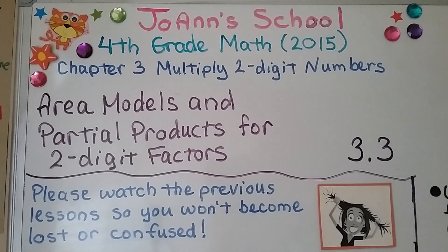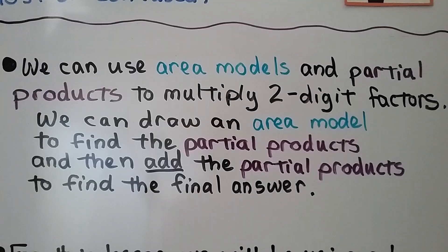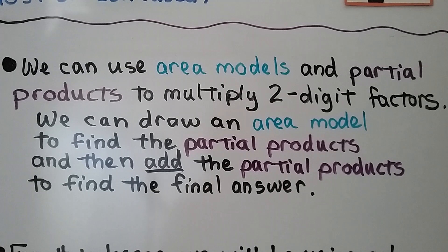Lesson 3.3: Area Models and Partial Products for Two-Digit Factors. We can use area models and partial products to multiply two-digit factors. We can draw an area model to find the partial products and then add the partial products to find the final answer.